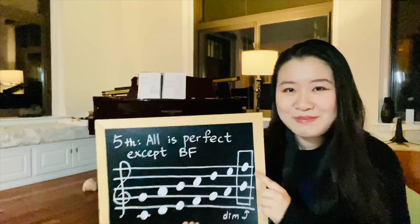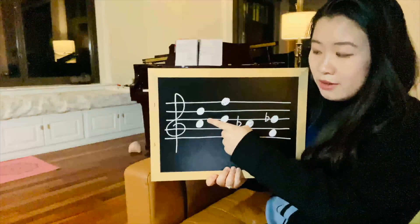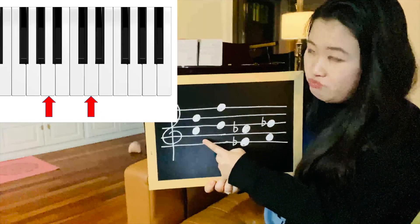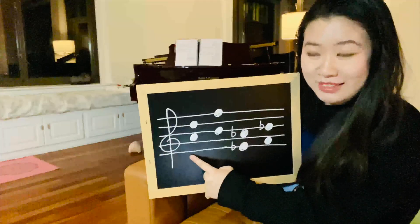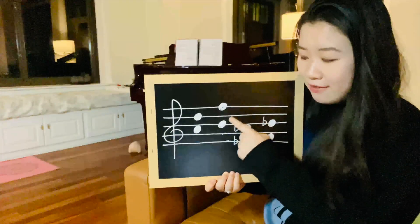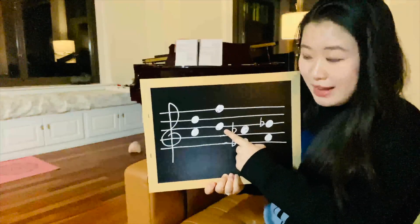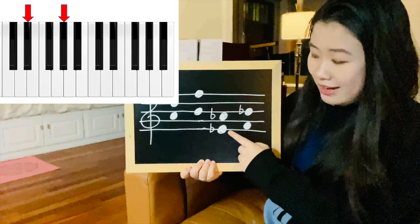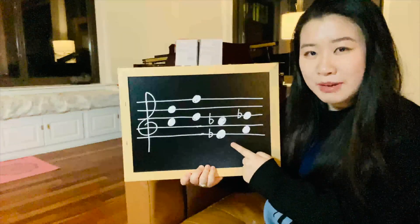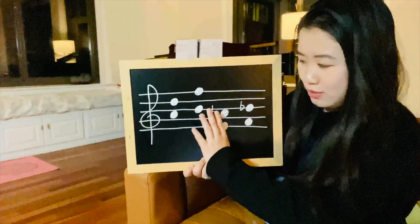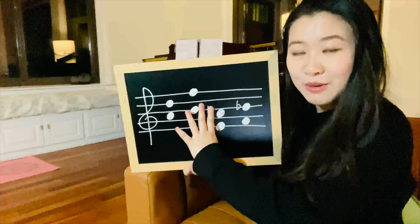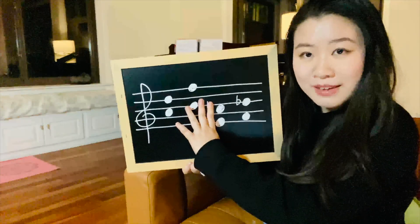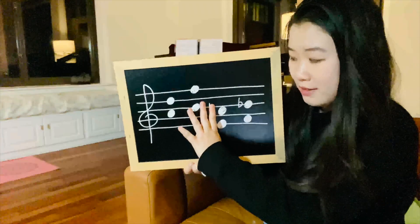Let's do some exercises together. This is a fourth — is it a B and an F? No, it's not. So this is a perfect fourth. This is a fifth — is it a B and an F? Yes, it is. So this is a diminished fifth. E flat going to A flat — when the two notes have the same accidentals, you can cancel them out; it won't affect the quality. So we have a fourth — are these two notes an F and a B? No, they're not. So this is a perfect fourth.